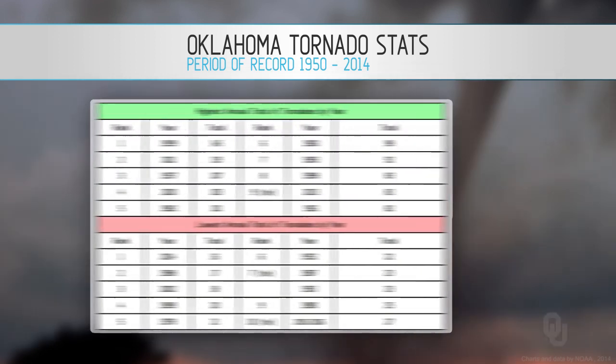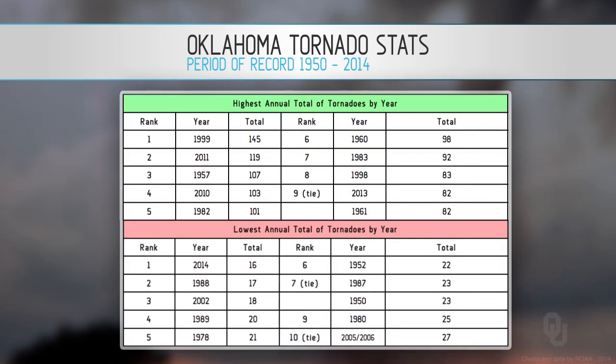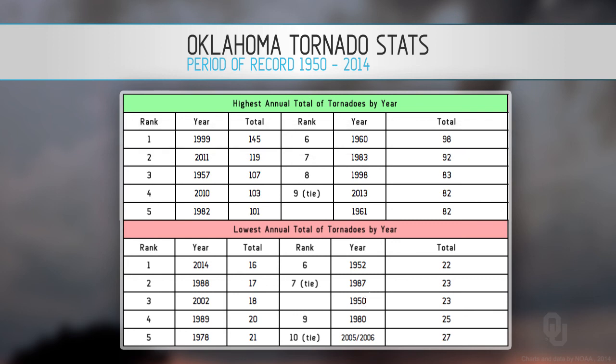Something always of interest is how many tornadoes we have in a given year, and what the highest and lowest years were. The largest number of tornadoes in a year: 1999, we had 145 — that ranks number one. In our viewing area in Oklahoma, we had about 60 on one particular day that year. The lowest number of tornadoes by year? 2014, with only 16 tornadoes.